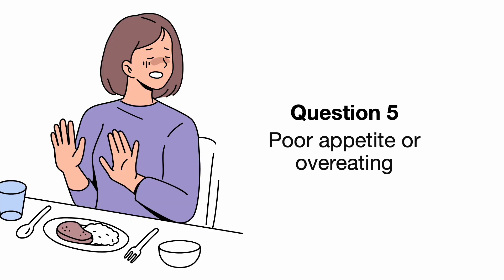Question 5 explores changes in appetite. This question evaluates appetite changes, which can vary among patients with depression. Loss of appetite leads to unintentional weight loss, while increased appetite or emotional eating results in weight gain.